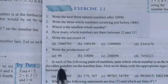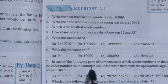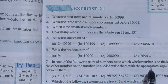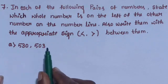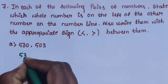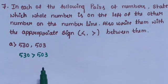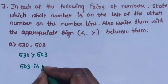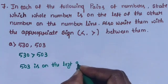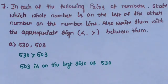Question number 7: In each of the following pairs of numbers, state which whole number is on the left of the other on the number line, and write them with the appropriate sign (greater than or less than). Sub-question A: 530 and 503. 530 is the greatest number compared to 503, so 503 is on the left side of 530.